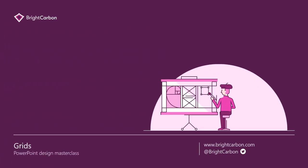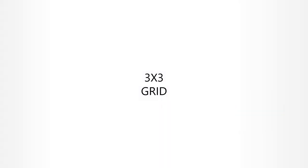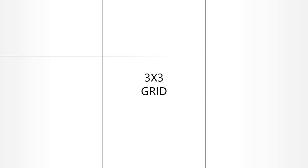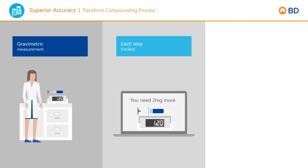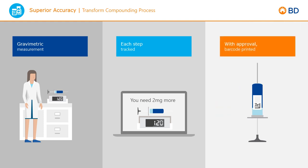Grids are pretty much design 101, and to be honest I'm surprised we've got this far into presentation design without having brought it up. You'll likely be familiar with grids from the world of photography — it's called the rule of thirds, where content is divided across a 3x3 grid, giving balance to content in the image. The same thing applies to presentation design. A grid helps to lay out your content in clear, easy-to-follow areas — for example, telling the start, middle, and end of a story.